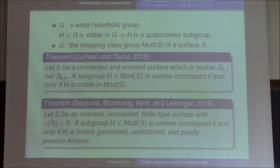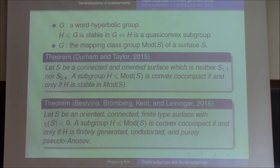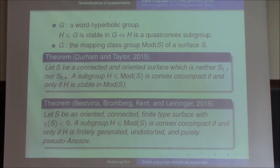I'll introduce another characterization of convex co-compactness. Let the surface be an oriented, connected, finite-type surface with negative Euler characteristic. Then a subgroup H is convex co-compact if and only if H is finitely generated, undistorted, and purely pseudo-Anosov — meaning for every infinite order element in H, the element is pseudo-Anosov.